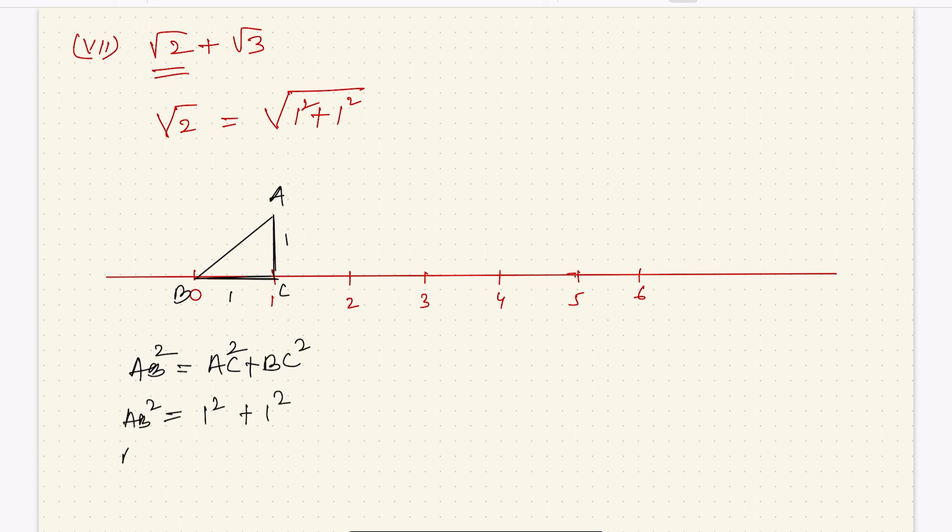AB squared equals AC squared plus BC squared. AB squared equals 1 squared plus 1 squared, which is 1 plus 1. AB squared equals 2, so AB equals root 2. Now take B as the pin side, A as the pencil side, and mark here.